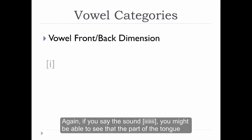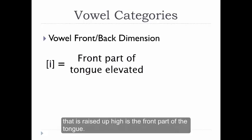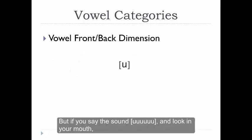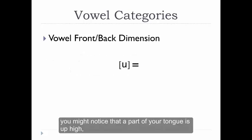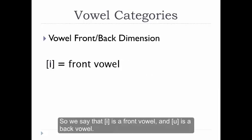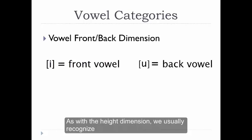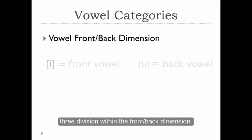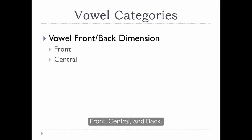Again, if you say the sound E, you might be able to see that the part of the tongue that's raised up high is the front part of the tongue. But if you say the sound OOO and look in your mouth, you might notice that a part of your tongue is up high, but it's the back part of your tongue, and it's raised up high in the back of your mouth. So we say that E is a front vowel, and OOO is a back vowel. As with the height dimension, we usually recognize three divisions within the front-back dimension: front, central, and back.